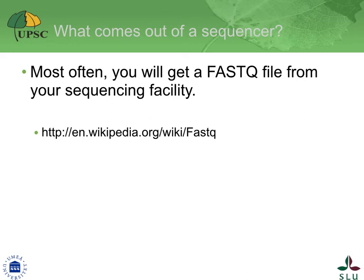The fourth line contains the quality as reported by the sequencer for every base pair of a sequence. The quality is a measure of how confident the sequencer is that it called the right base. The quality is a number ranging from 0, bad, to 40, best, on an inverse logarithmic scale. To have a single quality value associated with every base requires encoding values 0 to 40 into unique characters. For example, the exclamation mark corresponds to a value of 0 and the capital letter I to the value of 40.